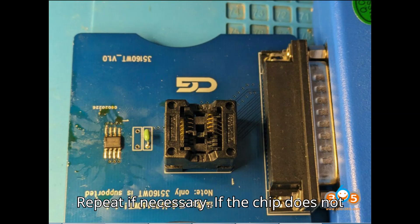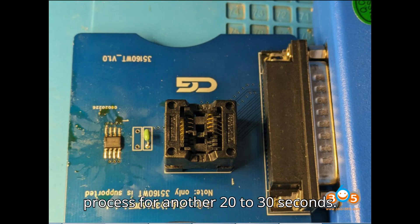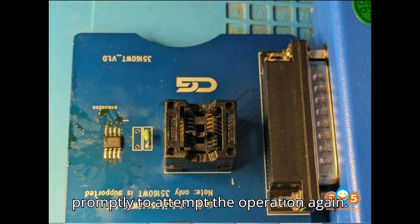Step 5: Repeat if necessary. If the chip does not enter the second stage of erasing during cooling, repeat the air gun heating process for another 20 to 30 seconds. Stop heating and reinstall the chip promptly to attempt the operation again.